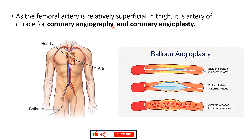This approach is also used for coronary angioplasty. A deflated balloon along with a catheter is advanced along the same route to reach the region of blockage in the coronary artery where plaque has formed. The balloon is then inflated to flatten the plaque and widen the lumen of the coronary artery.